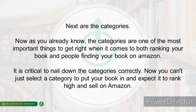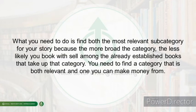Next are the categories, which are one of the most important things to get right when it comes to both ranking your book and people finding it on Amazon. It is critical to nail down the categories correctly — you can't just select any broad category and expect it to rank highly and sell. You need to find the most relevant subcategory for your story, because the more broad the category, the less likely your book will sell. Find a category that is both relevant and one you can make money from.